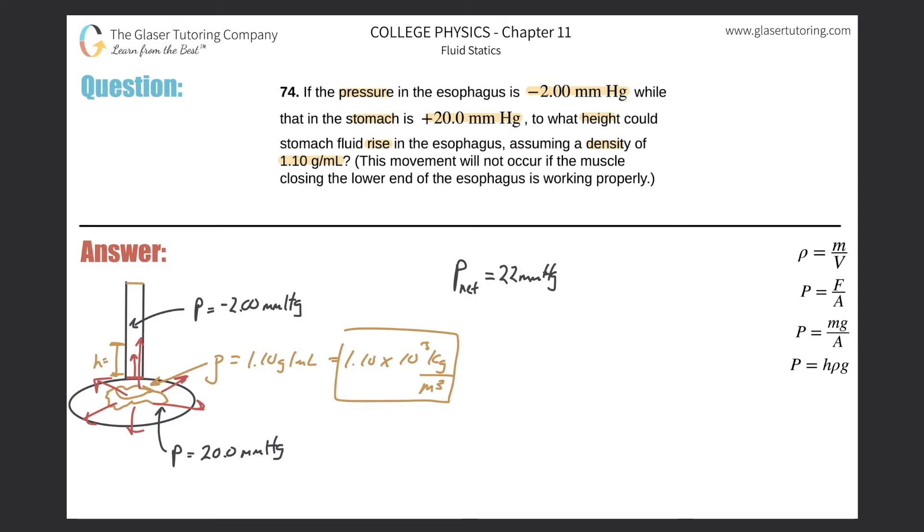Now, we have to somehow relate this to the height of a certain object, of the height of a certain liquid, given its specific density here. Now what we need to do is we need to now somehow take this and try to convert it into a value we can use in this equation. Now, what I could do here is I could set up an inequality basically.